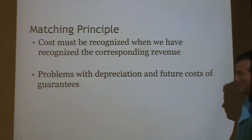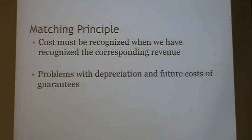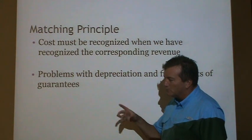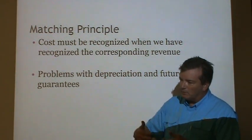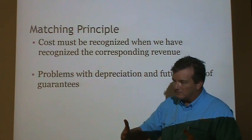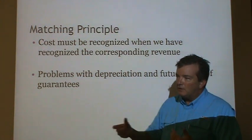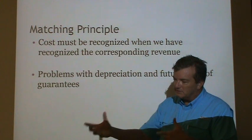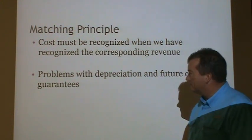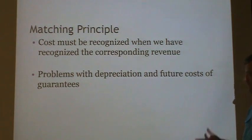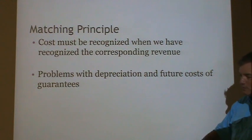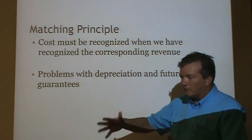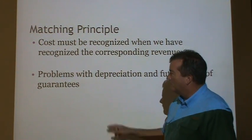There's this thing called a matching principle — the cost must be recognized when we have recognized the revenue. Like the example of Lucent Technologies: if you go to sell a product and you're going to get paid over the next four years, and there's some initial cost before you even made the sale and then some cost to install the product, you have to say the cost of installing the product gets matched against the money they're paying, and then you can show a profit.